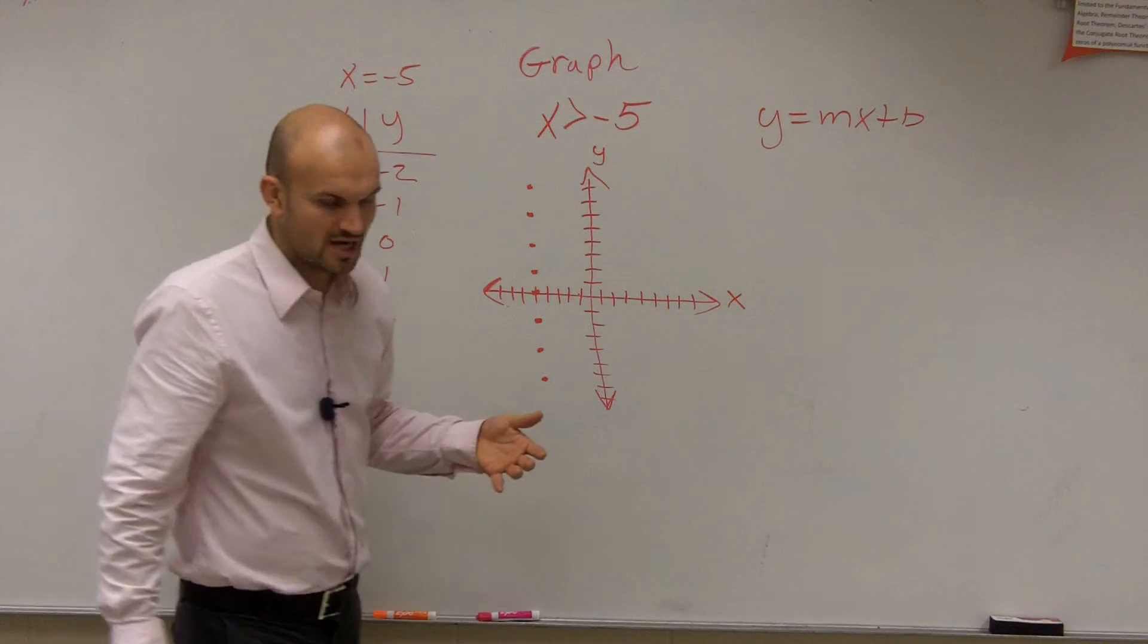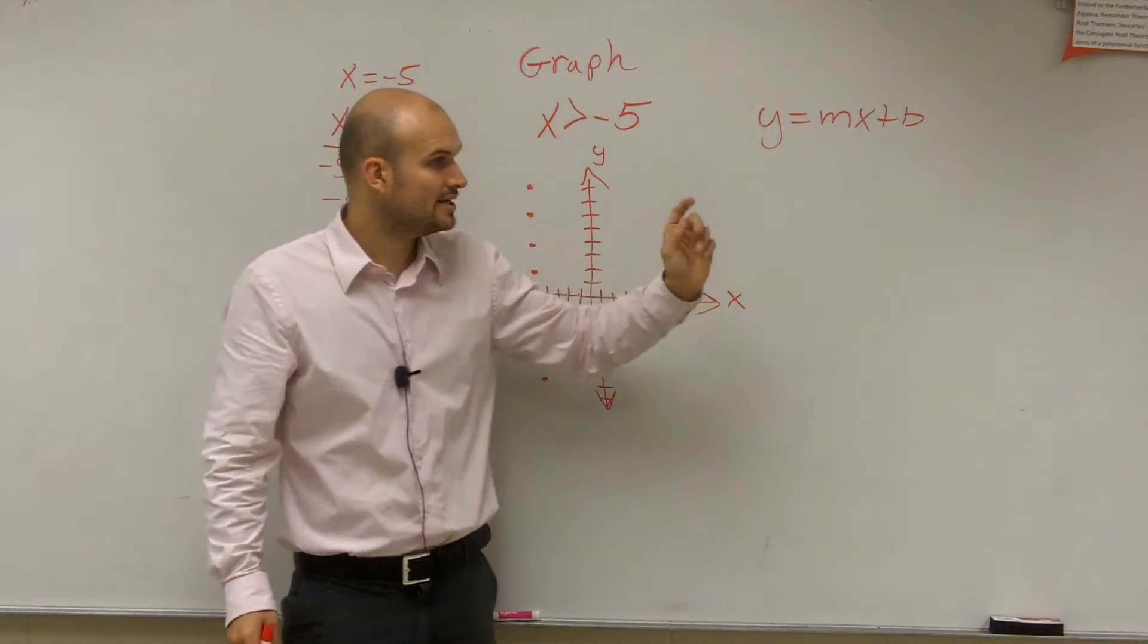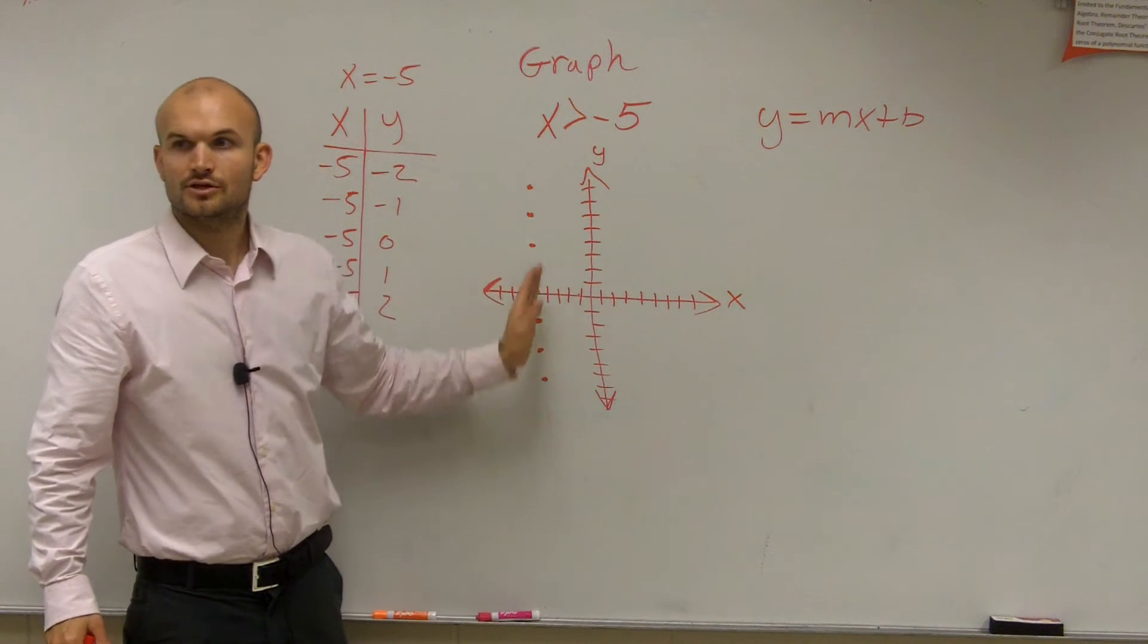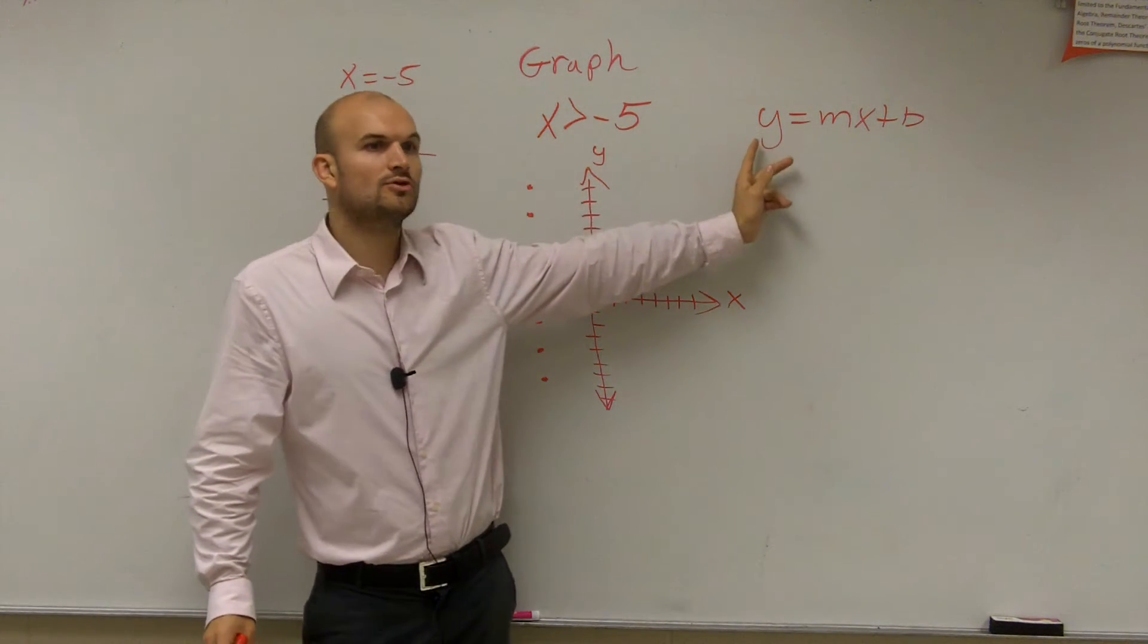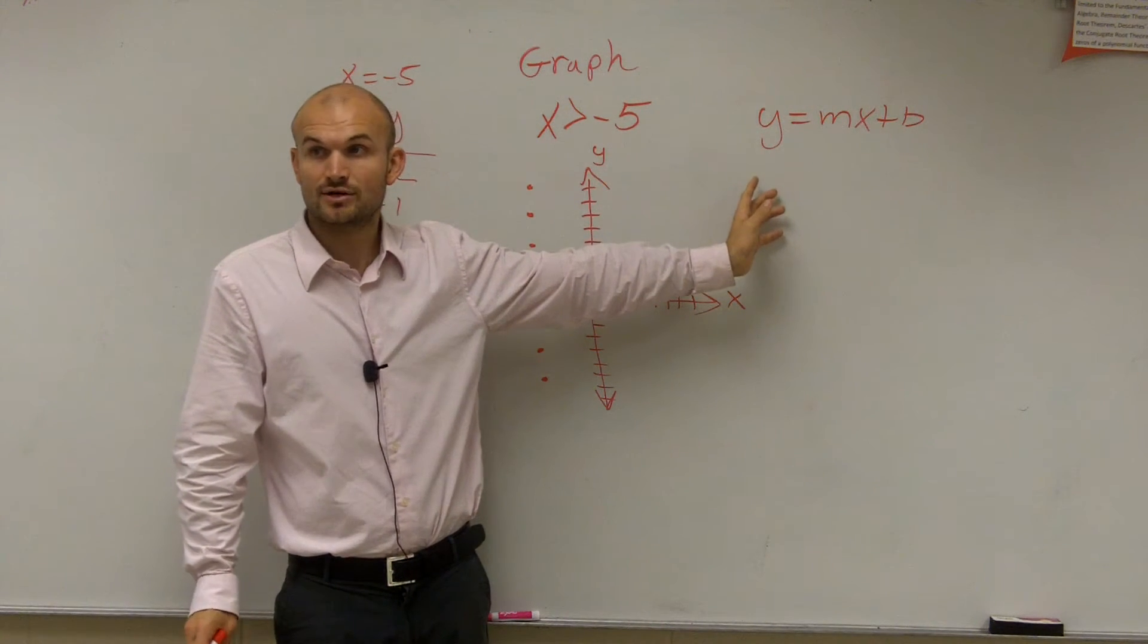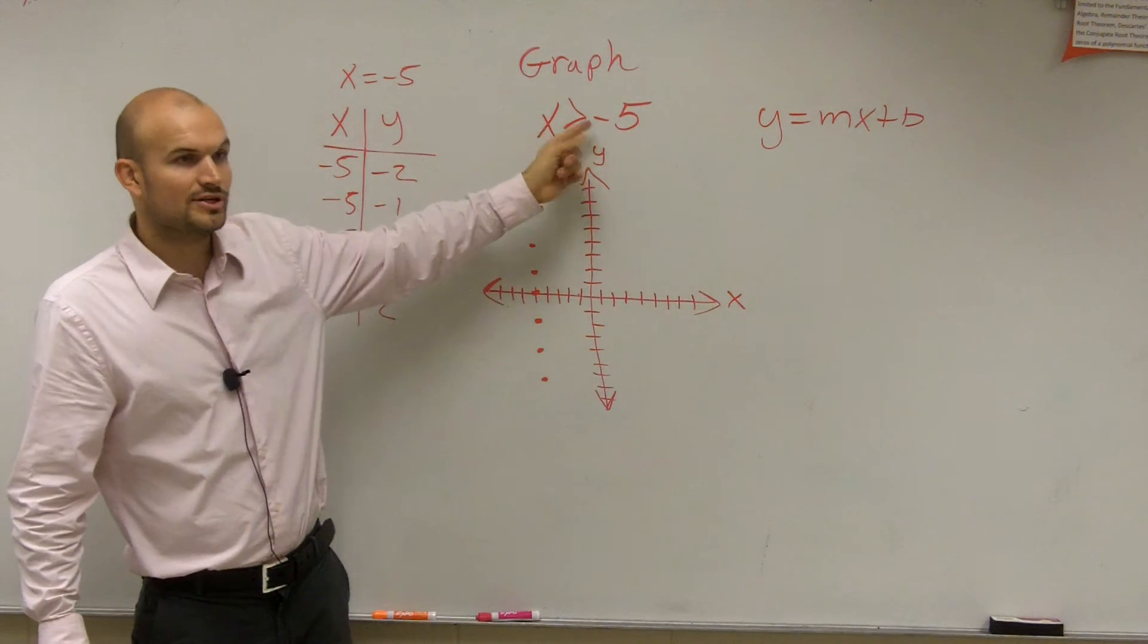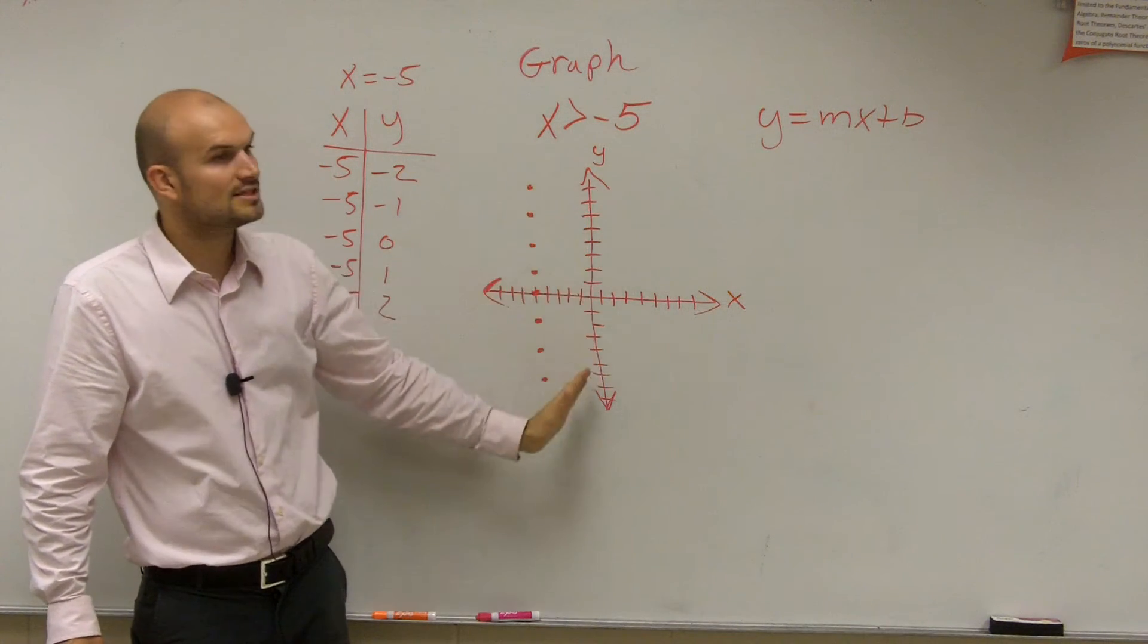If you guys remember, when we talked about vertical lines, the reason why you can't write it in this format, for a couple reasons, one, your slope is undefined. You don't have a slope. Your slope is undefined. And also, remember your y-intercept is when x equals 0? In this one, you don't have a y-intercept. It does not cross the y-axis.